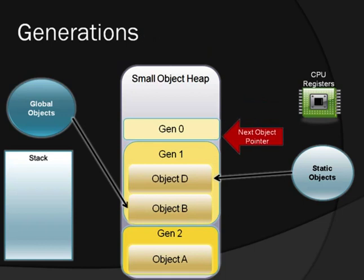If a Gen 1 garbage collection takes place, it will look at objects D and B. Notice that they're both rooted objects, so all that will happen is objects B and D will survive garbage collection, but they'll be promoted into Generation 2.